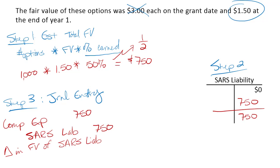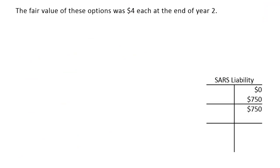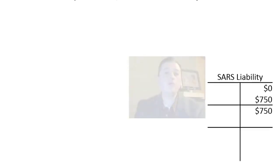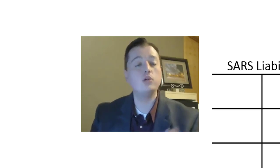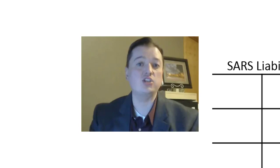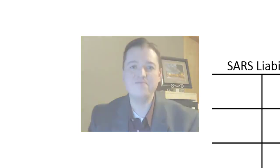Step 2: using a T-account, I want the ending balance of the SARs liability to be $750. Going from zero to $750 requires a credit of $750. Step 3: I make the journal entry — credit SARs liability $750, debit compensation expense $750, labeled as 'change in fair value of SARs liability' or 'change in fair value of liability options.' The next time we look at these options is end of year two when they're worth $4 each. Give it a try, and when we come back we'll check your work and look at what happens when Sally exercises.